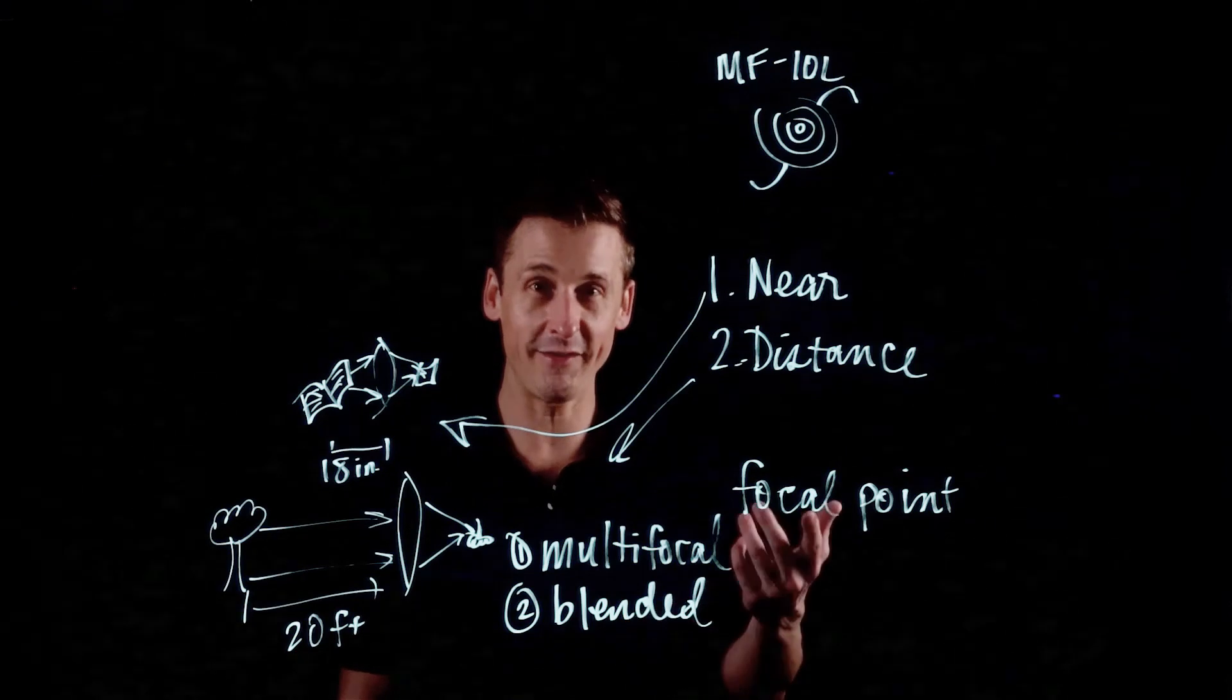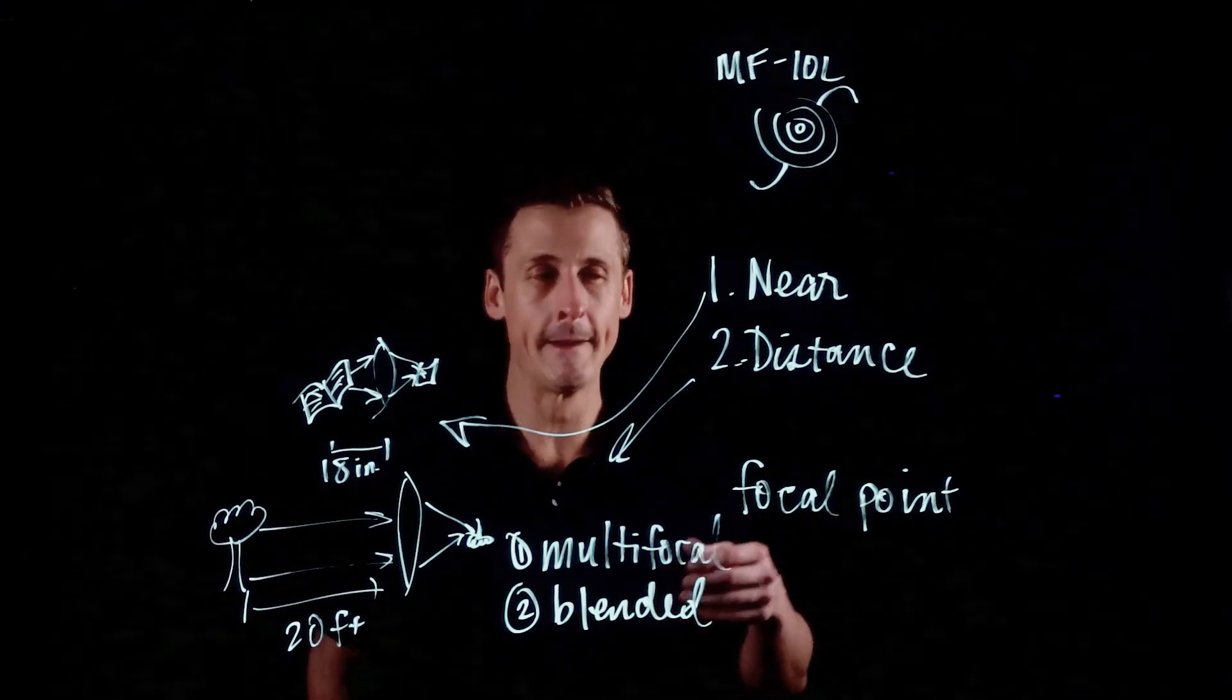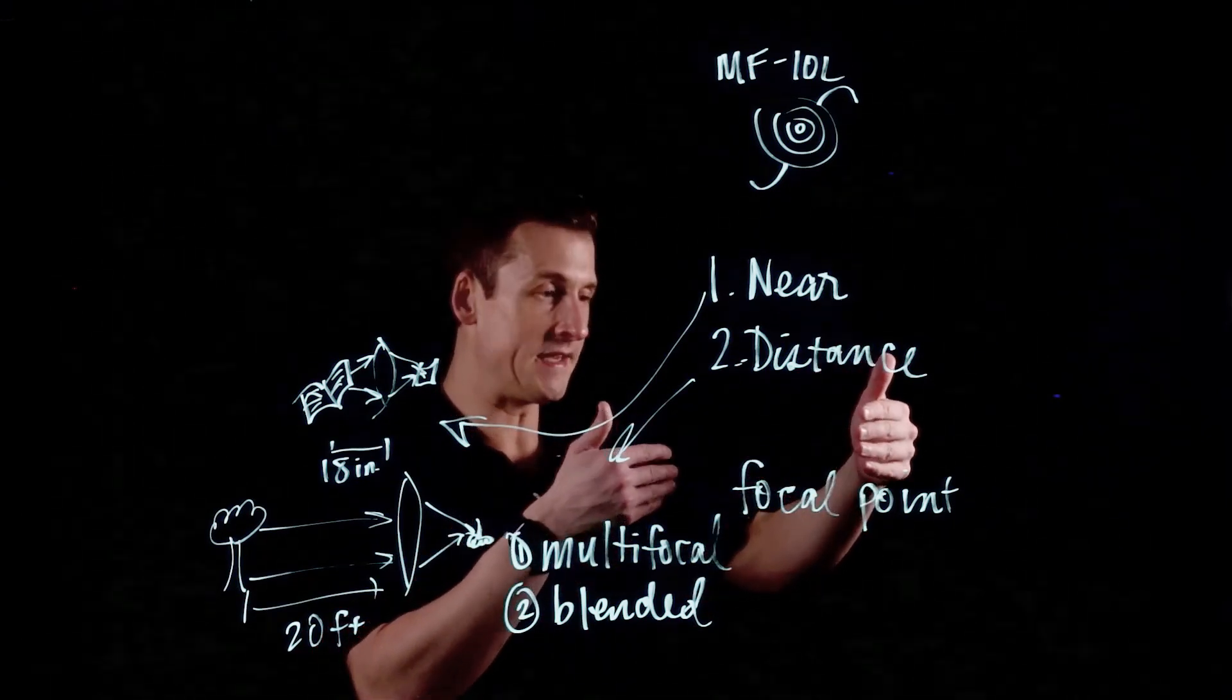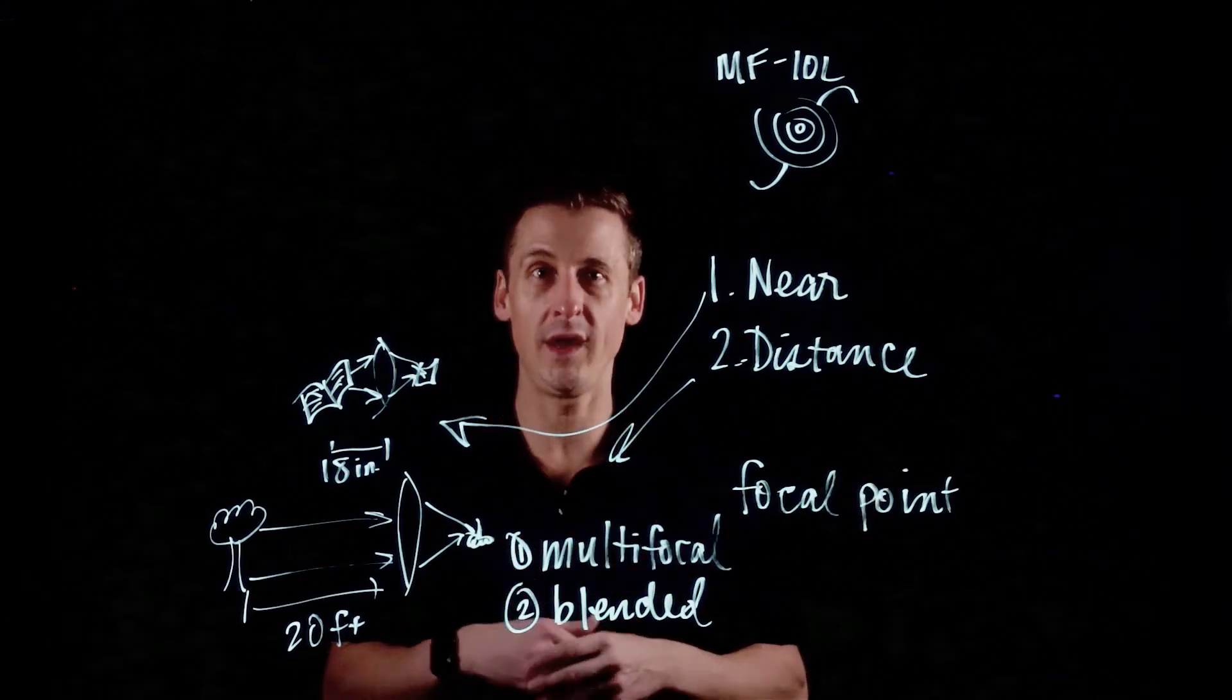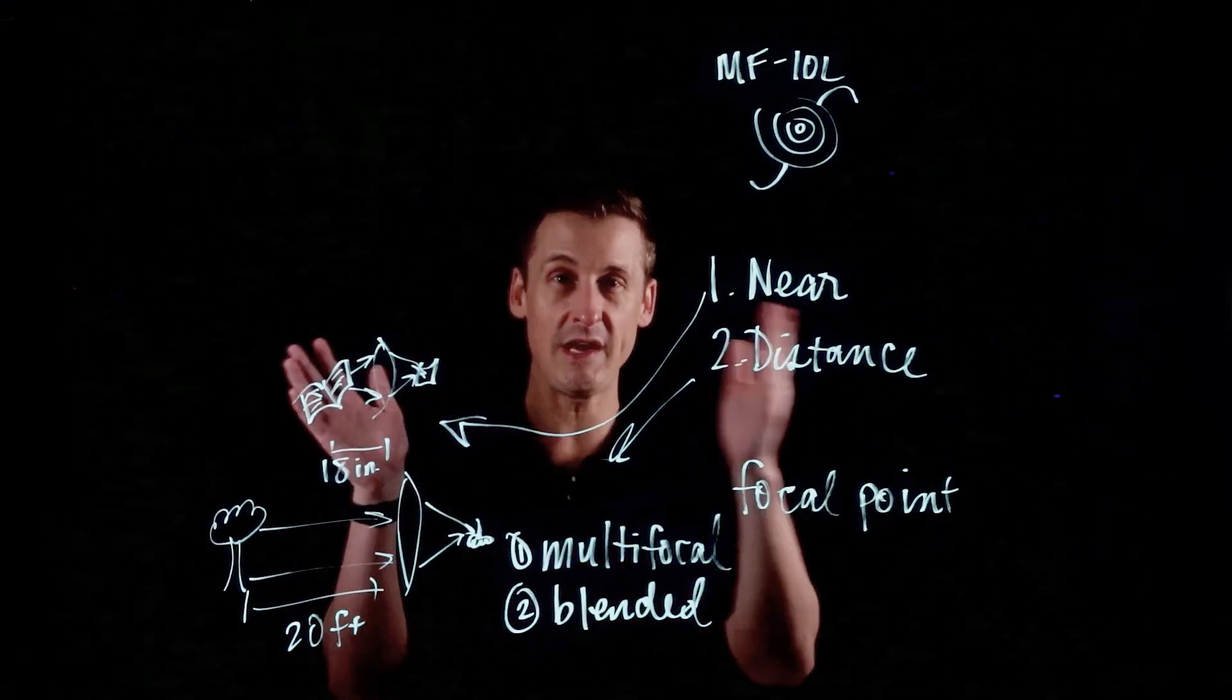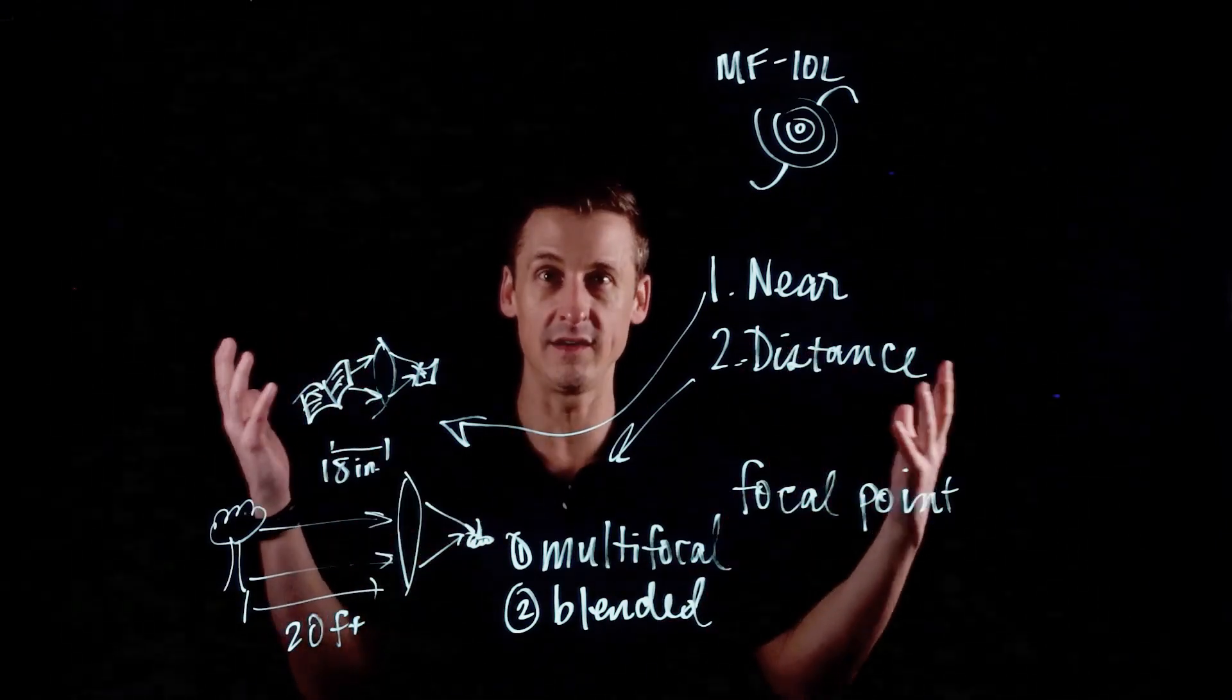So now that I've said what blended vision is not, which is not mono vision, what is it? Blended vision is creating a difference between the two eyes for distance and near that is small enough that they still can work together. It's the same way as your ears work really well together even though they're on opposite sides of your head. It gives you spatial and stereo sound because your ears are working together to create this one blended soundscape around you.